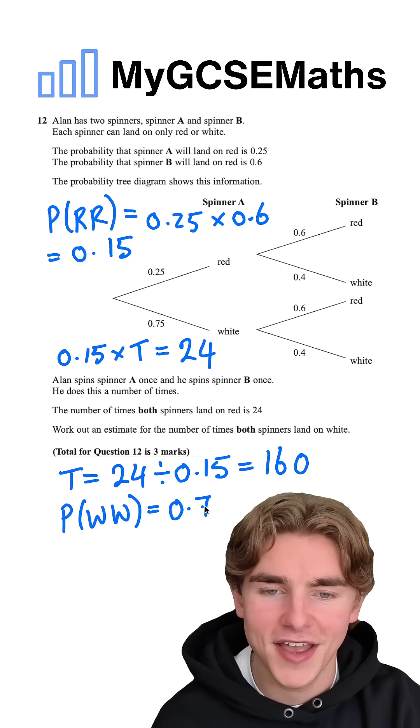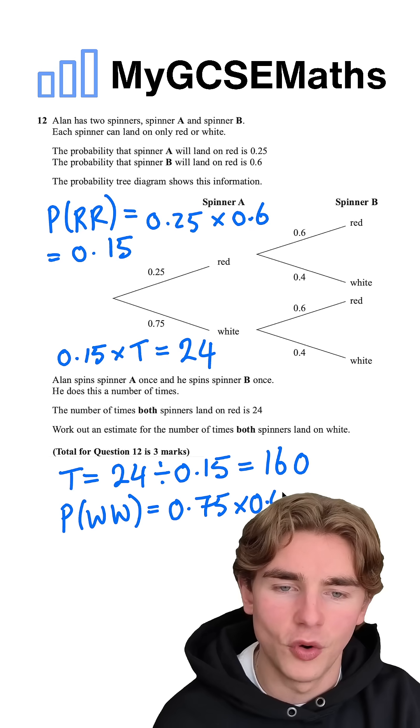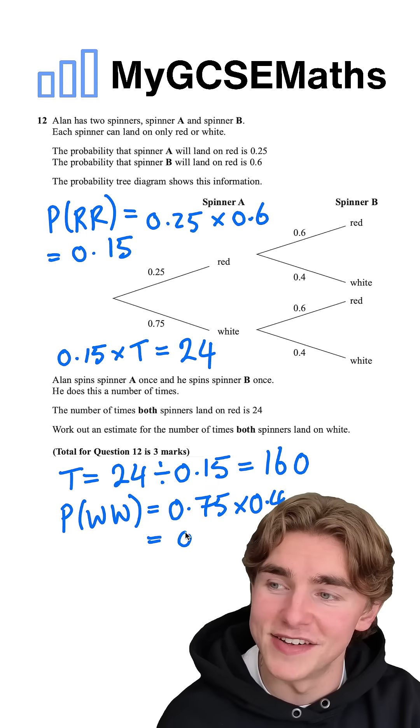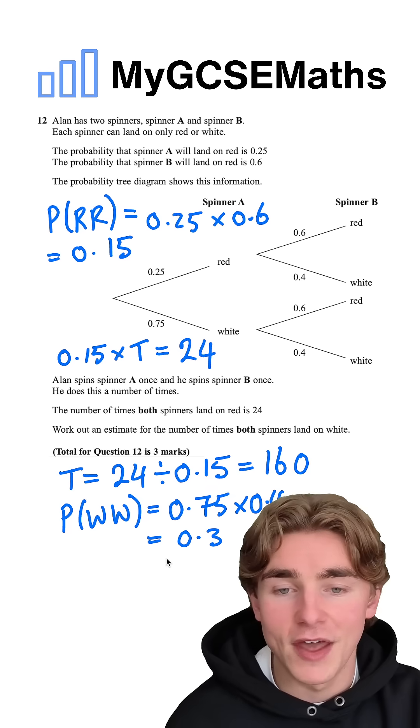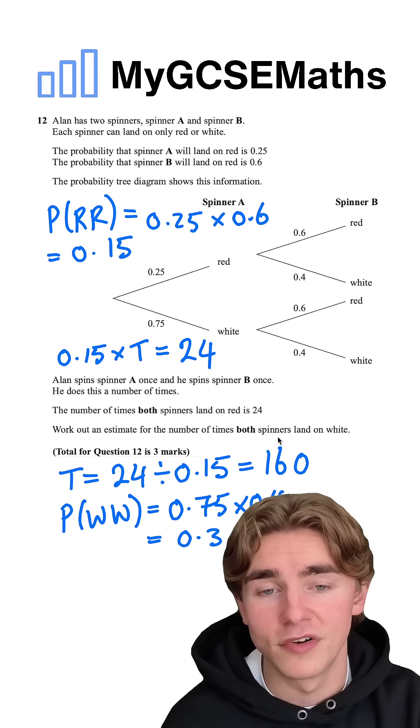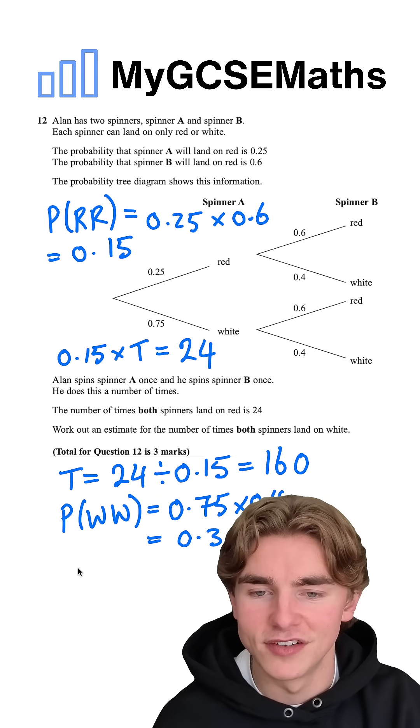which is going to be 0.3. Then we can do 0.3 times the total number of spins, 160. That is going to give us 48.